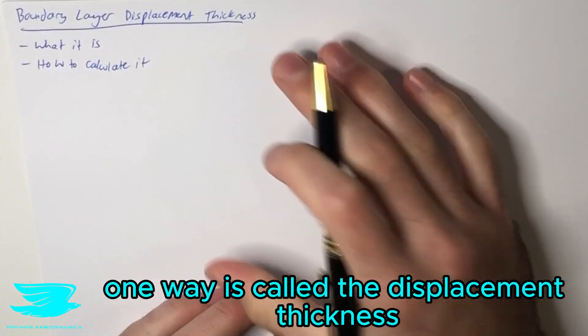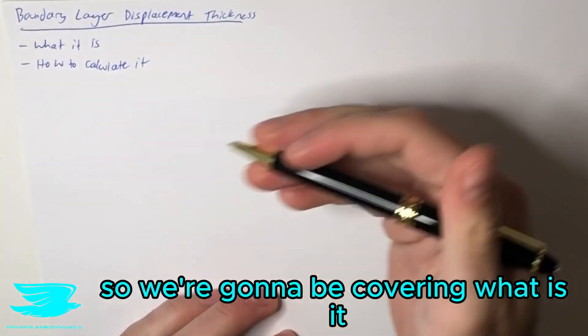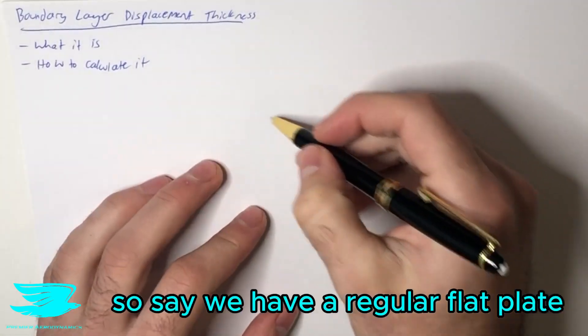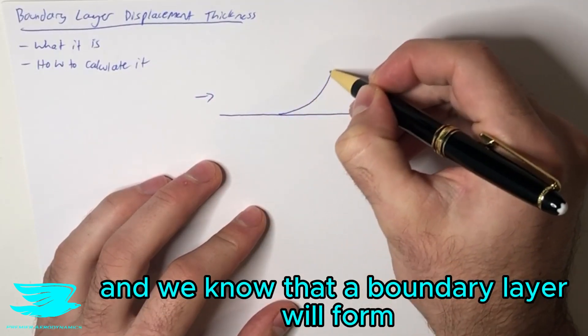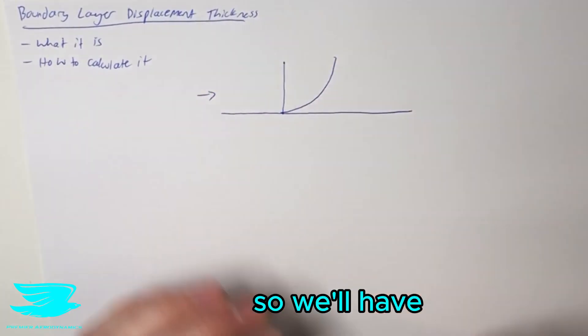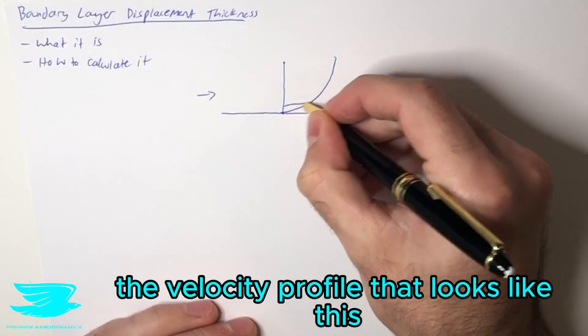One way is called the displacement thickness, so we're going to be covering what is it and how to calculate it. So let's say we have a regular flat plate and we have a flow going over it and we know that a boundary layer will form. So we'll have the velocity profile that looks like this.